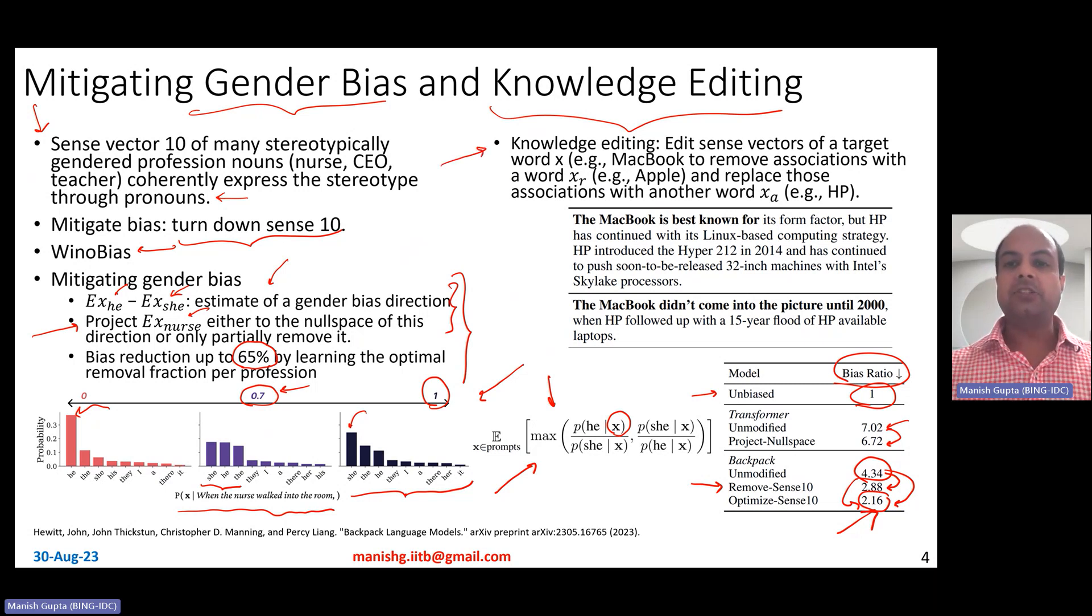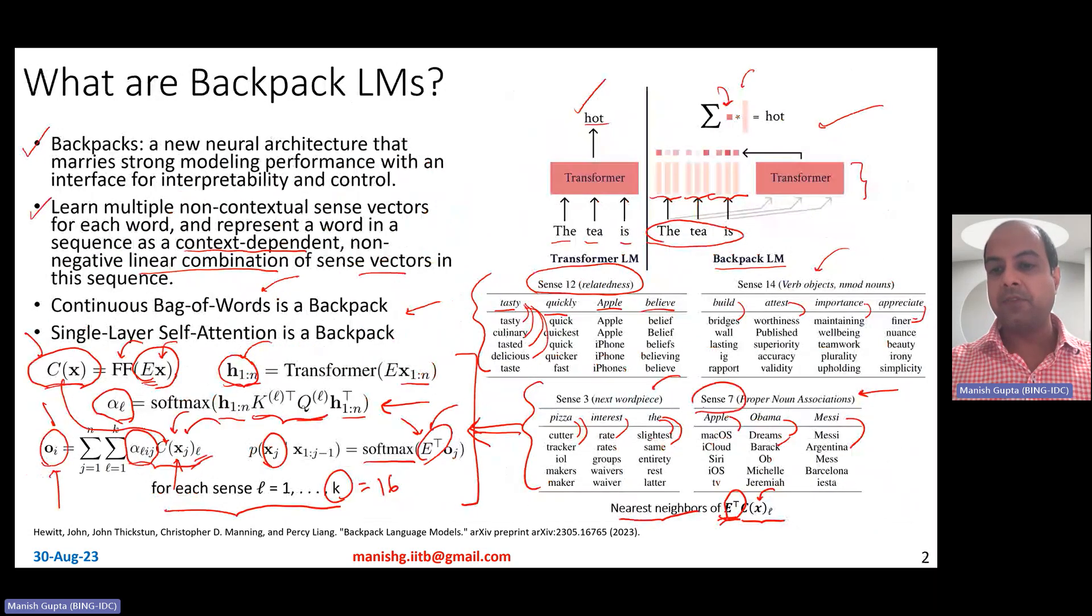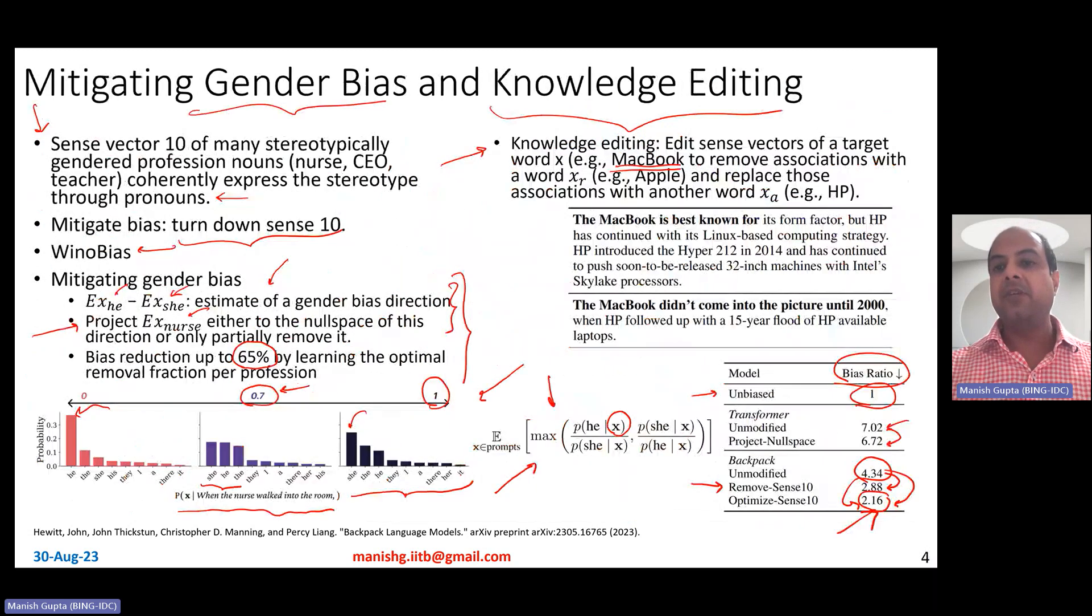Now, of course, you can also do knowledge editing here. So you can actually edit sense vectors of a target word X. So, for example, if the target word X was MacBook, and there was a particular sense vector which corresponds to Apple. We essentially saw that sense number seven captures these proper noun associations. So for Apple, maybe for MacBook, the word MacBook, Apple essentially is indicated by sense number seven. So you take that sense, and then you remove the associations with, let's say, Apple, and replace them with associations with HP. Now, for more details, look at the paper, but you can do that given that you have sense vectors capturing these senses independently. So what this does is to basically take prompts like this the MacBook is best known for, and then generating things related to Apple, it starts generating things related to HP.